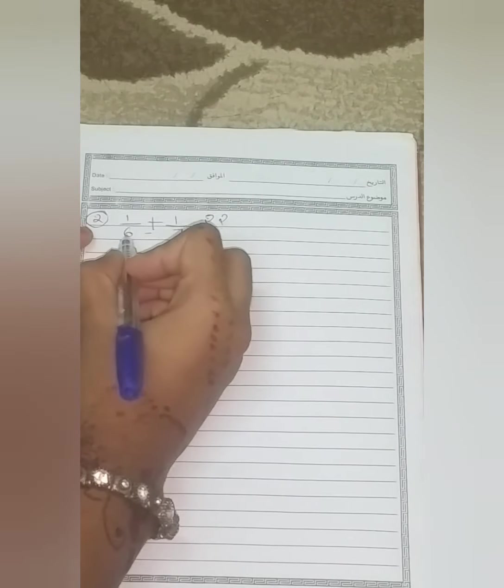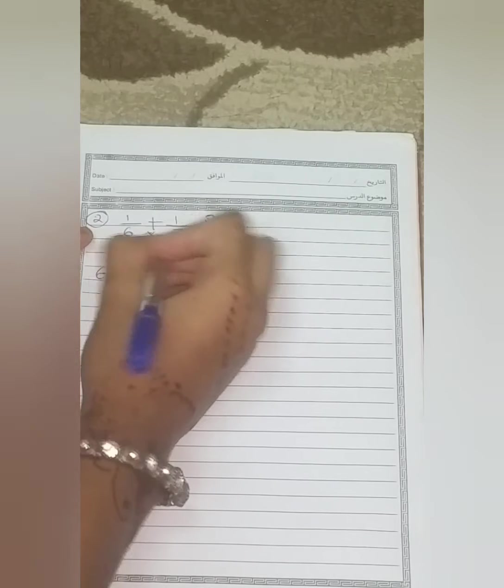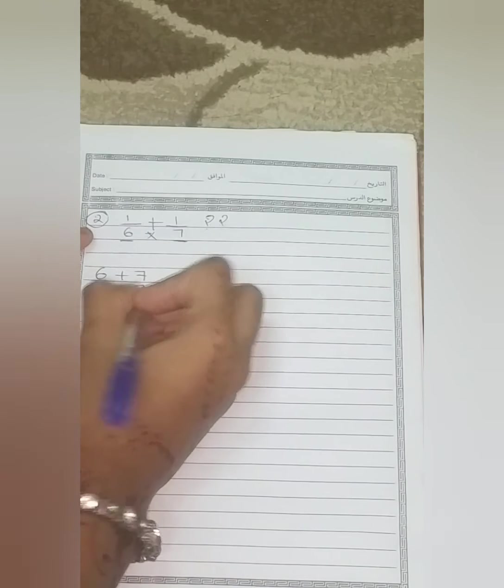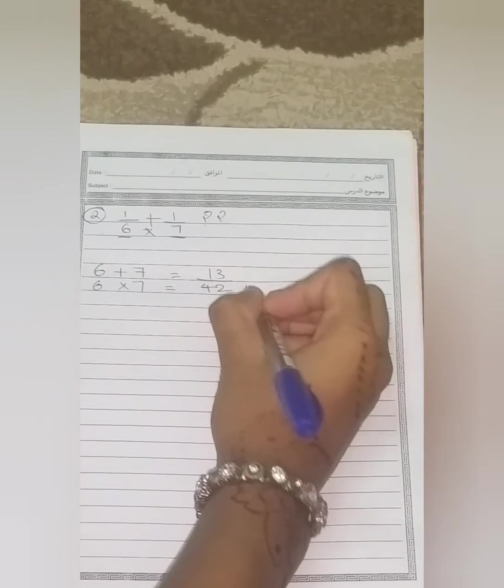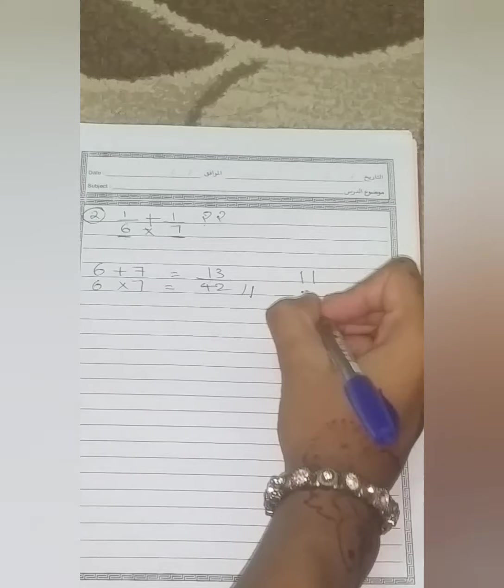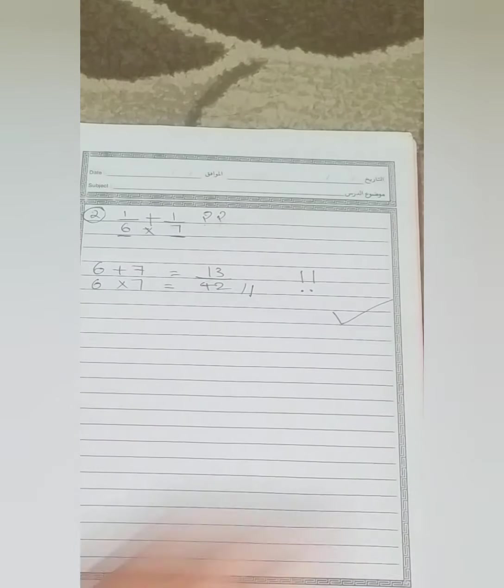Now in the second step, we should multiply these both denominators together, like 6 into 7, that is equal to 42. So this is the easiest way to find the denominators, the fractions with the numerators 1.